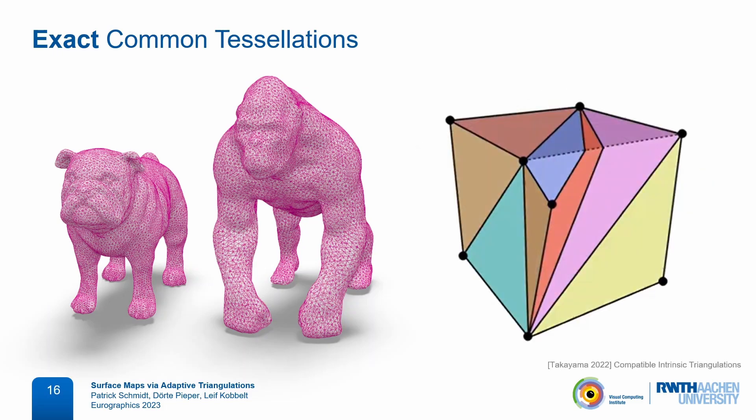There is one recent method that gets rid of the explicit edge-edge intersections by using common intrinsic triangulations instead of overlay meshes. This is a very attractive setting, but there is currently no guaranteed way to compatibly construct these triangulations on two meshes. In any case, the complexity of all of these representations is always tied to the number of input mesh vertices.